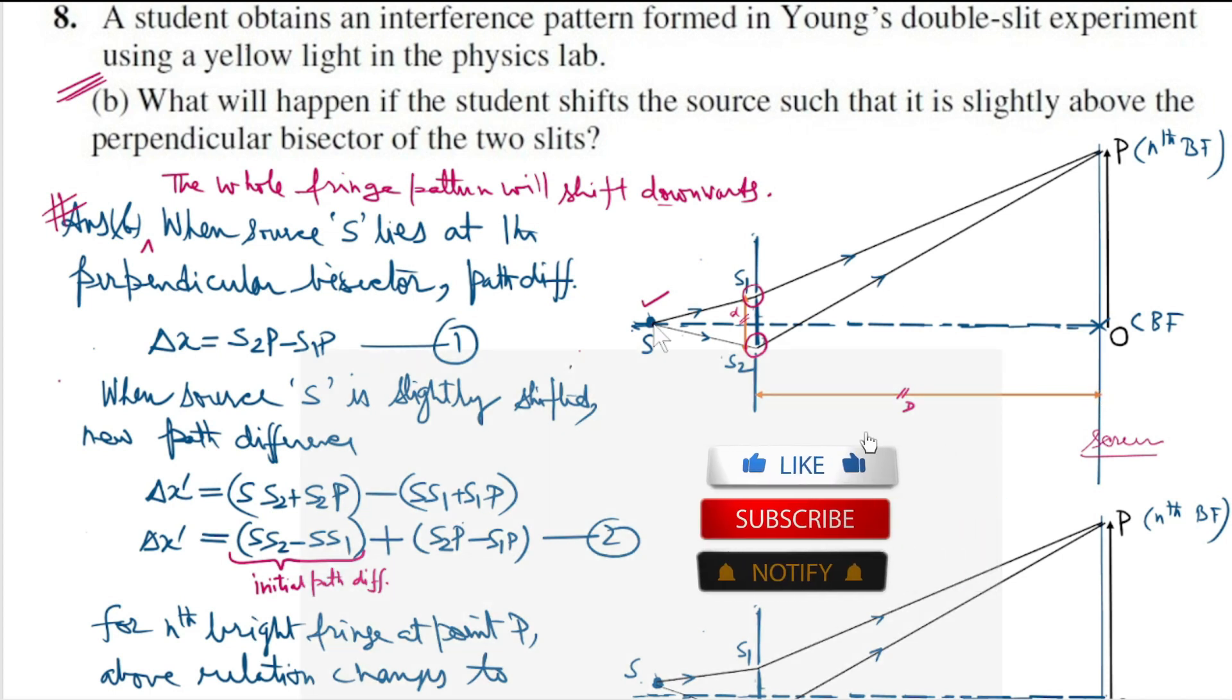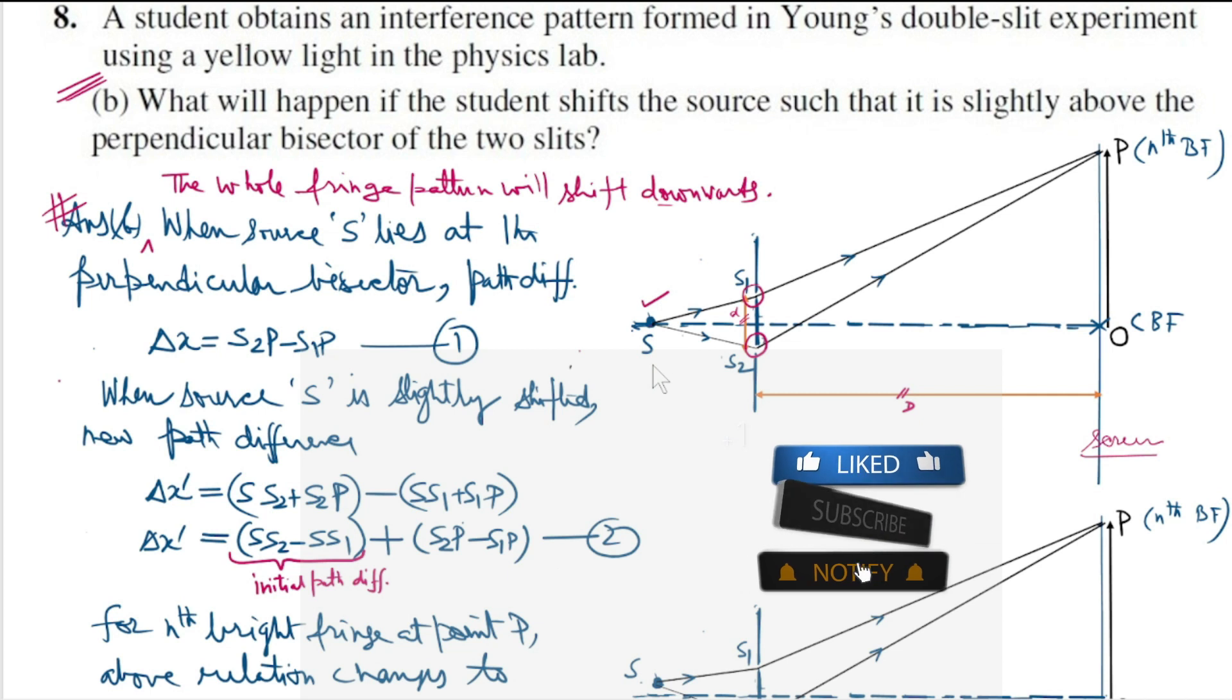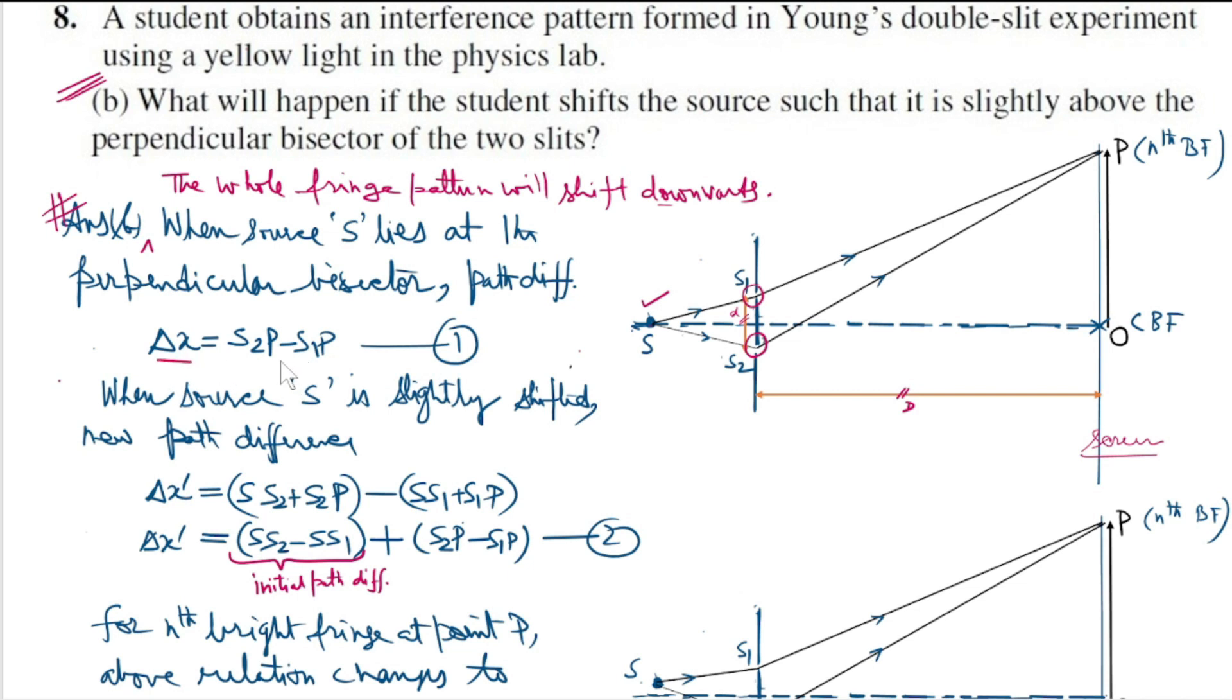Let's justify it. When the source S was at the perpendicular bisector, there is no initial path difference, and the overall path difference Δx equals S2P minus S1P, relation number 1.